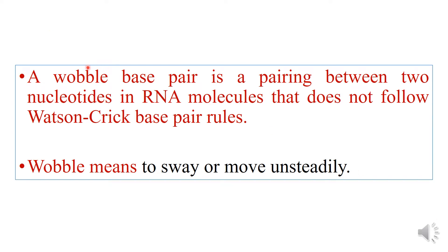A wobble base pair, on the other hand, is a pairing between two nucleotides in RNA molecules that does not follow the Watson and Crick base pairing rules. Wobble here means to sway or to move unsteadily. Because of this untraditional base pairing, there may be different combinations of base pairs, which we will see in the next slide.